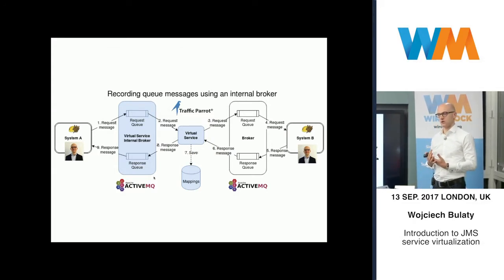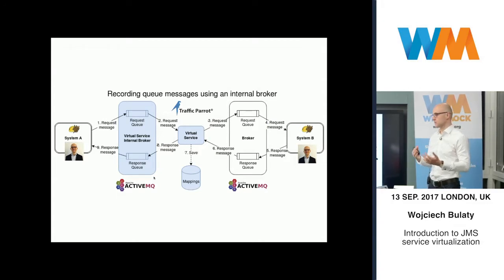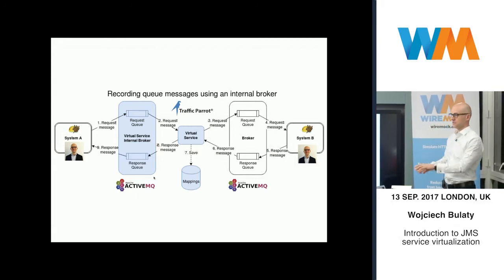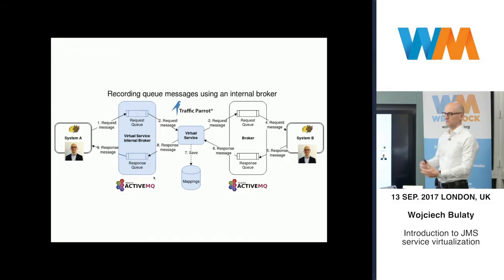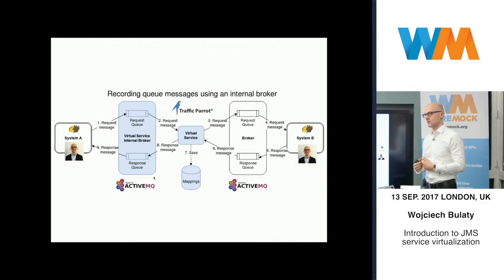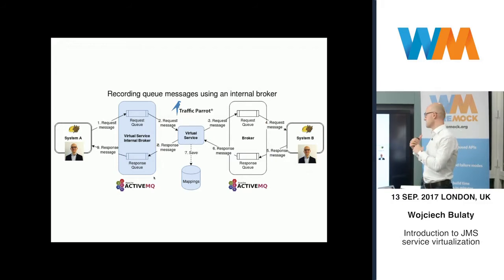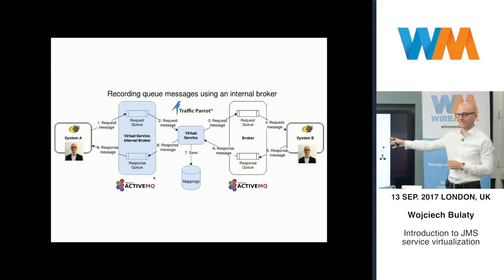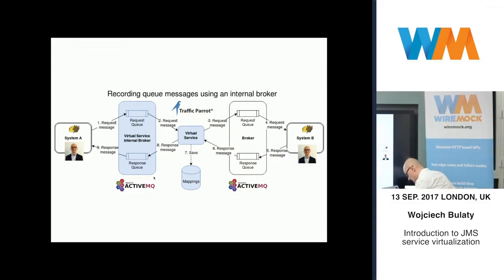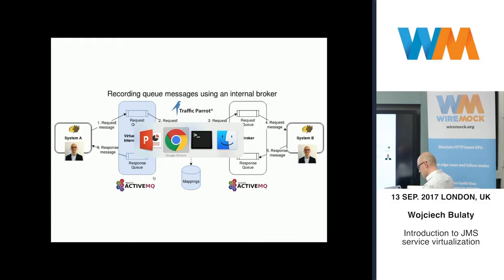I wanted to look at an example of how we can do that with a tool, so it's not just dry theory. You can do this with any tool. I wanted to give you something you can actually do at home if it makes sense for you. We don't want to create full systems just to demo this, so I'm going to pretend to be System A and System B using Hermes JMS — a tool that lets you consume and send messages. We're going to use ActiveMQ for the broker, and for the virtual service we're going to use Traffic Parrot with an ActiveMQ instance running internally.